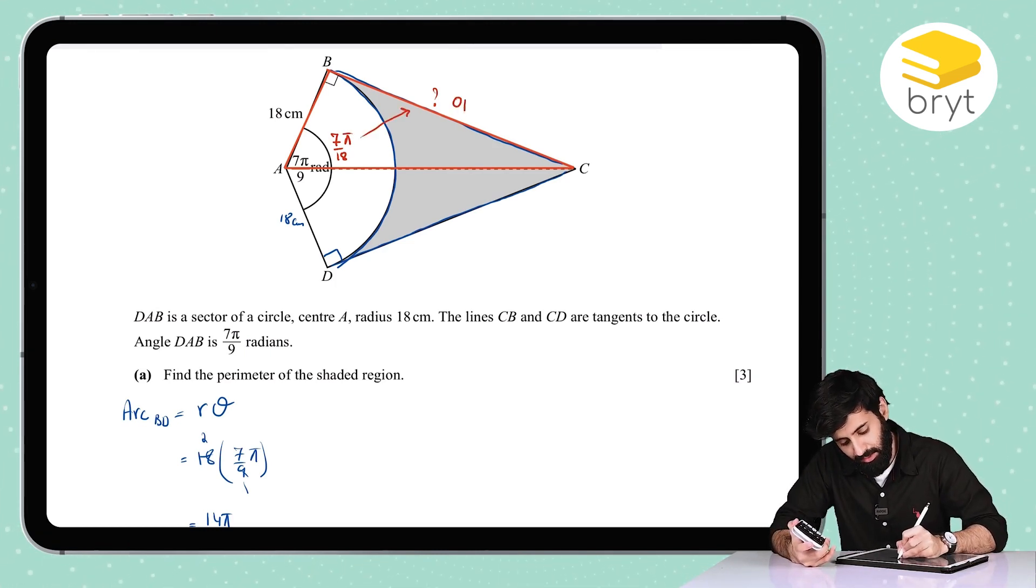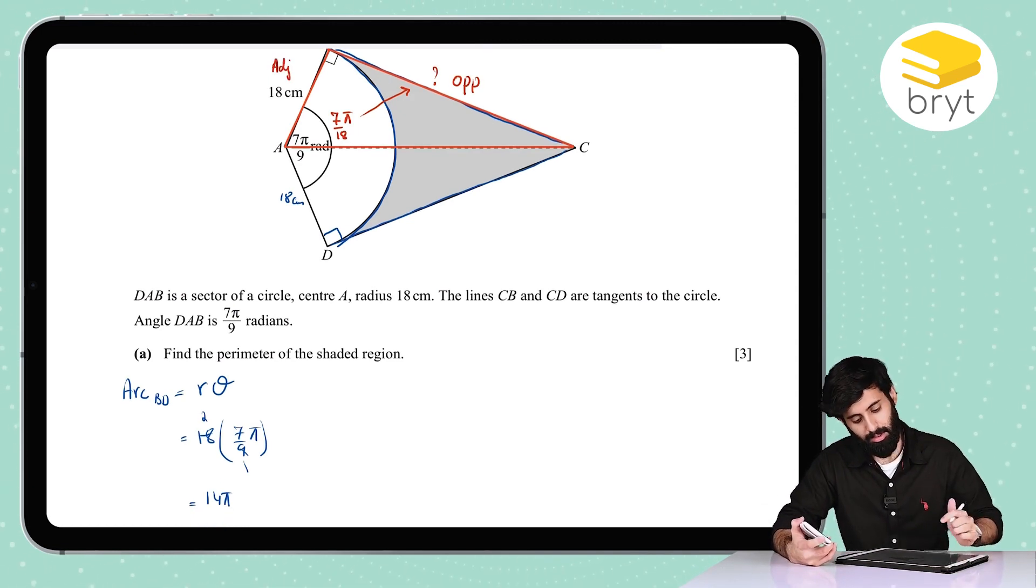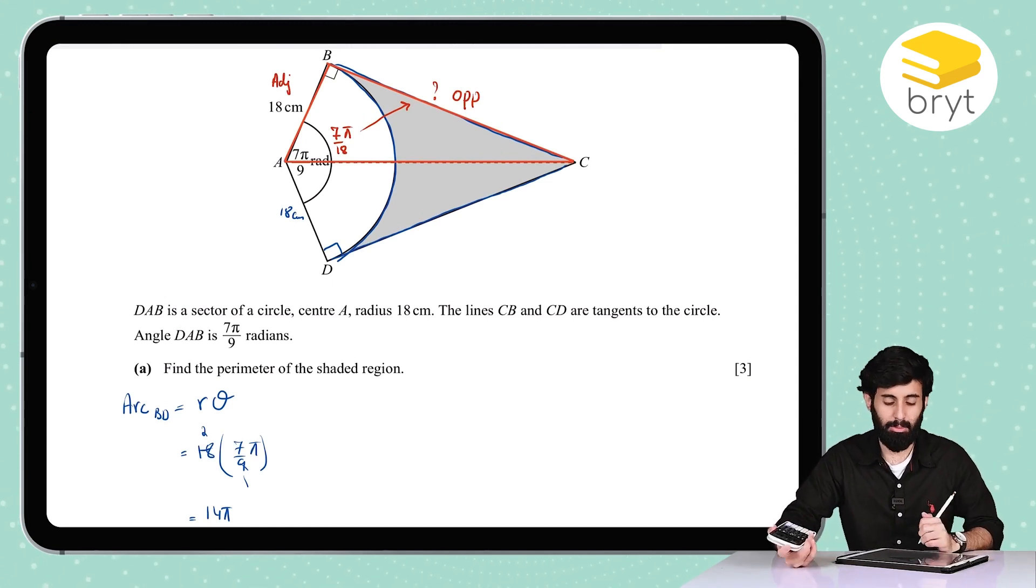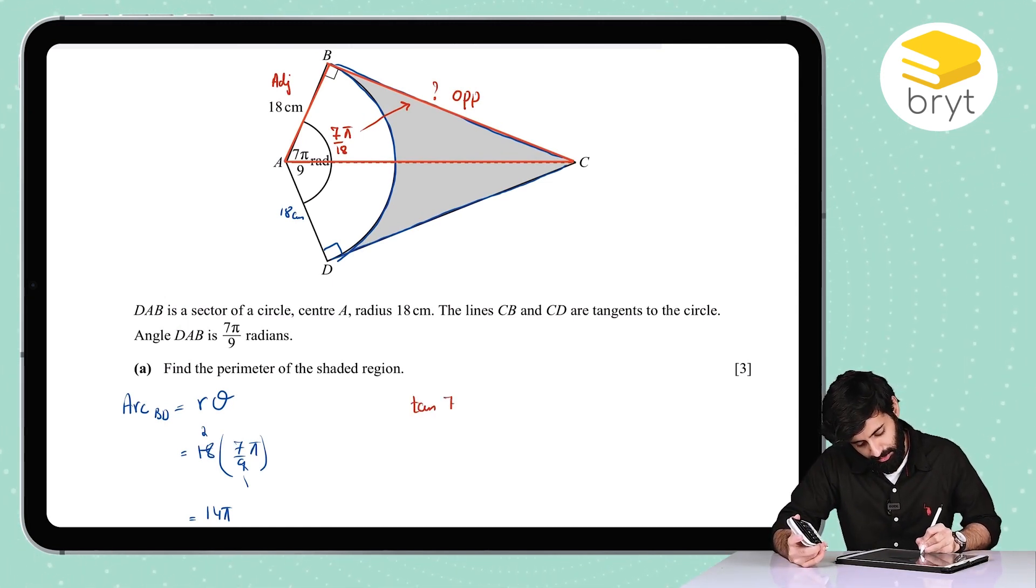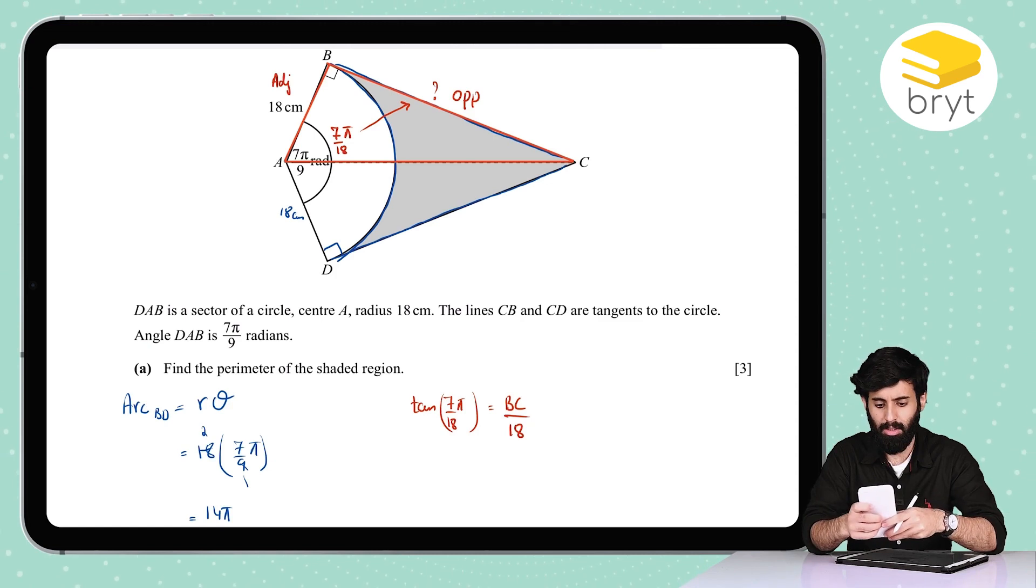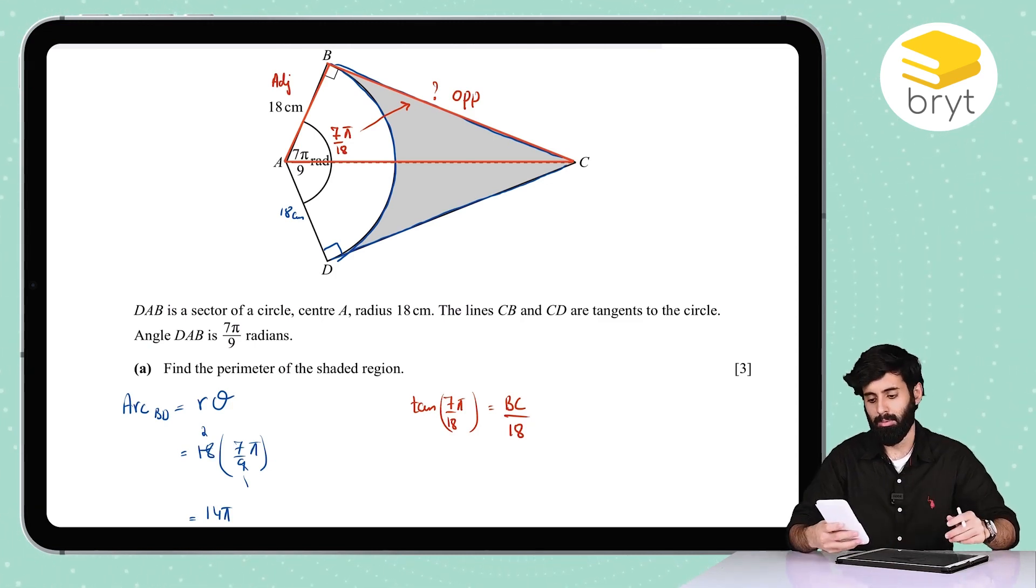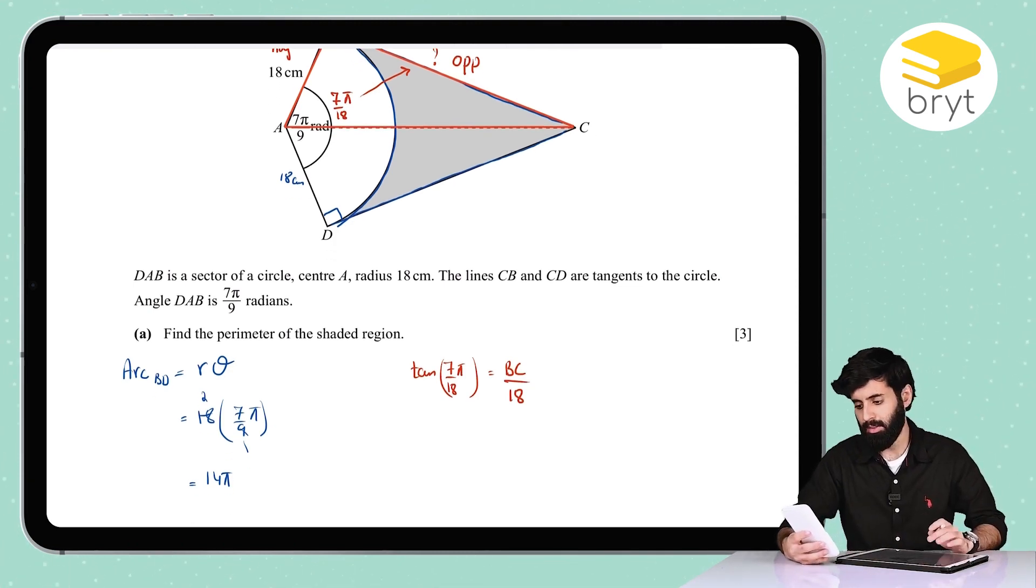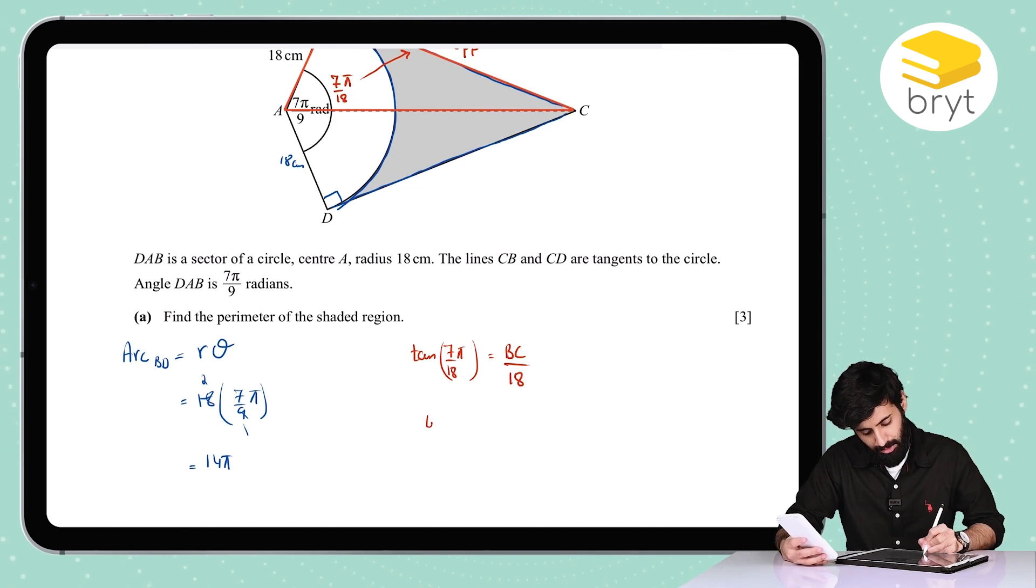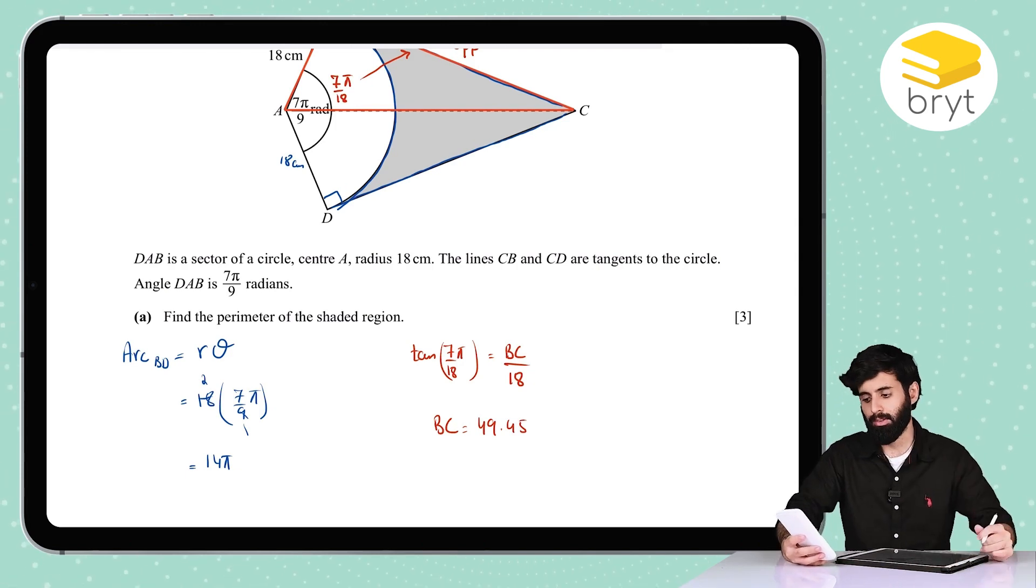Now the length that we want is opposite of the angle, the length that we have is adjacent to it. So what trigonometric ratio are we going to be using? We're going to be using tan. So tan of 7 over 18 π is equals to opposite upon adjacent, which is 18. So tan of 7 upon 18 π, make sure that you put π with the numerator and not with the denominator, otherwise you'll mess the whole thing up. Then multiply it by 18, so we're looking at 49.45. That means the length from B to C is 49.45.